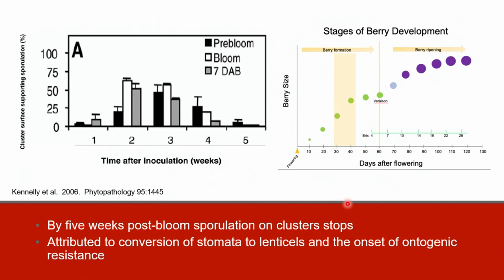Research from the same study showed that berry sporulation stopped about five weeks post-bloom, which corresponds to the shaded area on the berry development graph. The lack of berry sporulation is attributed to the conversion of functional stomata into lenticels and to the onset of ontogenic resistance. We will discuss ontogenic resistance in detail when we cover management of downy mildew, black rot, and powdery mildew.